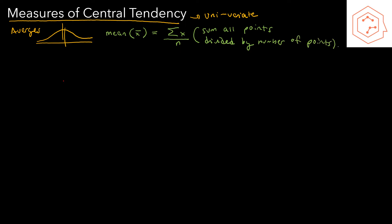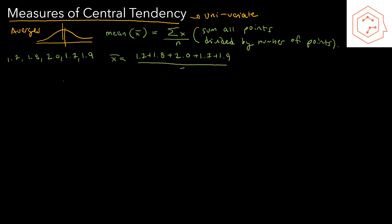For example, suppose I had the data set: 1.7, 1.8, 2.0, 1.7, and 1.9 — with no units attached. To calculate the mean, I would sum all the points: 1.7 plus 1.8 plus 2.0 plus 1.7 plus 1.9. I'd notice there are 5 points, so I'd divide by 5, and I'd get a mean of 1.82, which is indeed somewhere near the middle of this data set.